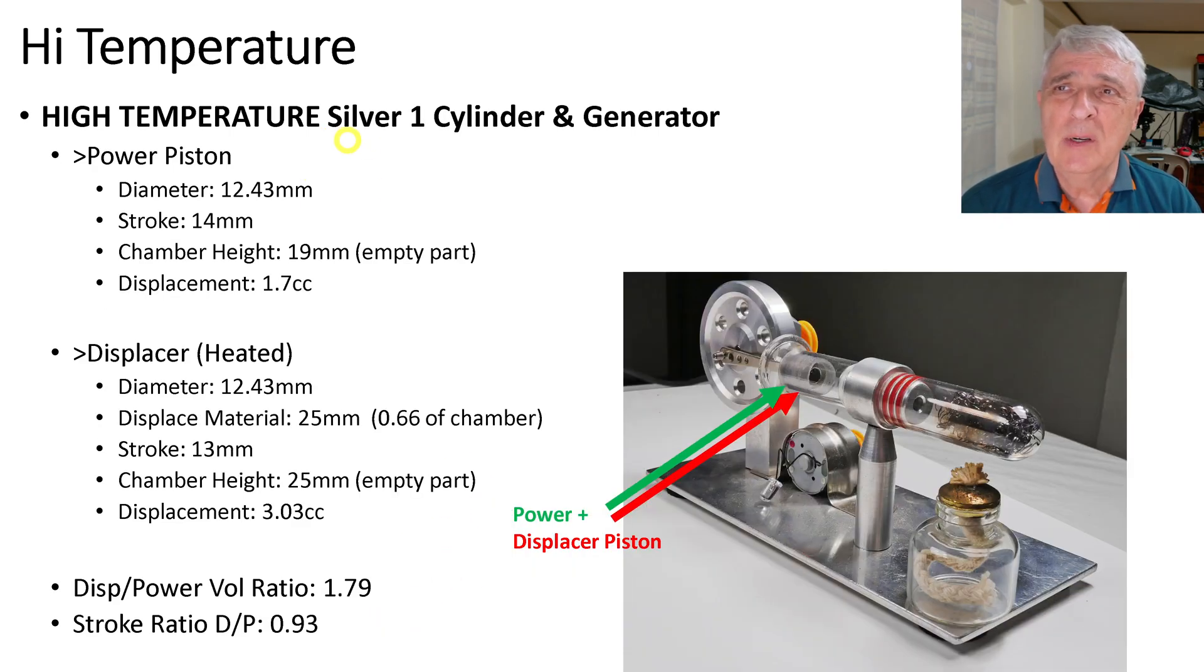The last of the high temperature is what I call the one-cylinder and generator. Again, we're not using the generator. It's just something to differentiate it. The power piston is this piece back in here. The diameter is 12.43 millimeters. The stroke is 14 millimeters. The chamber height, the empty part in here, so I should have called maybe chamber length, is 19 millimeters, and the displacement is 1.7 cc's.